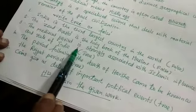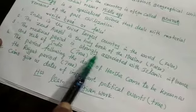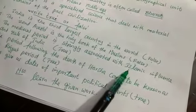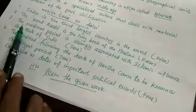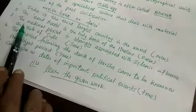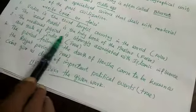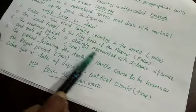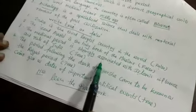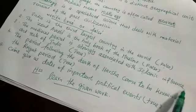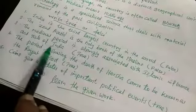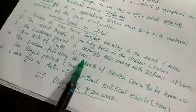Number 3. The medieval period is strongly — S-T-R-O-N-G-L-Y — associated with Islamic influence — I-N-F-L-U-E-N-C-E — and rule of India. That is true.